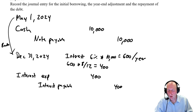Even though it has 'revenue' in the name, unearned consulting revenue is a liability — I owe the client $15,000 worth of consulting service. On December 31st, 2024, we've worked for two months (November and December) at $3,000 per month, earning $6,000. The adjusting journal entry is: debit unearned consulting revenue $6,000, credit consulting revenue $6,000. The money is no longer unearned.